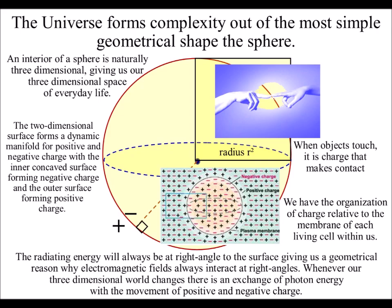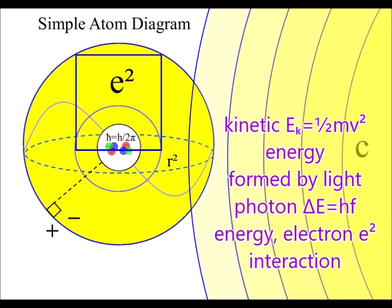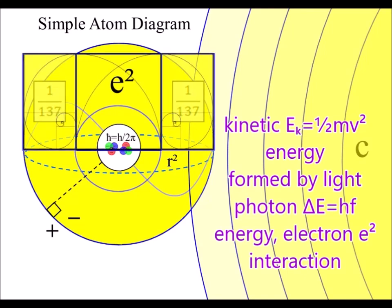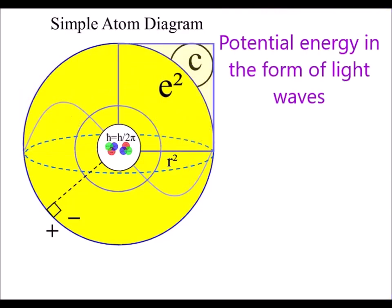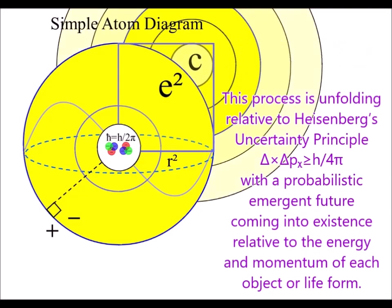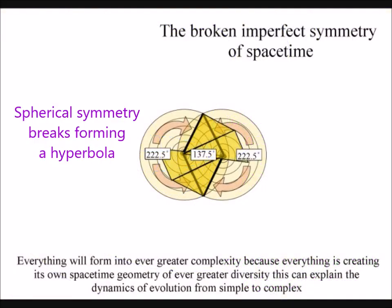Everything is based on a geometrical process of energy exchange, formed by light photon energy continuously transforming potential energy into the kinetic energy of matter in the form of electrons.